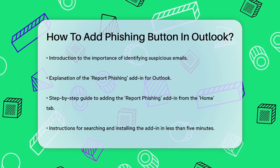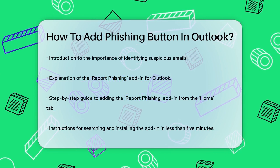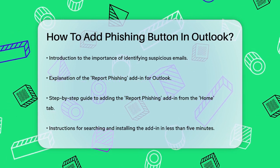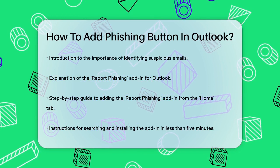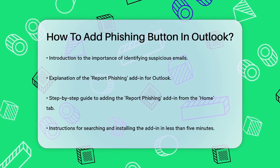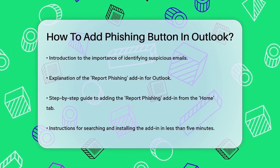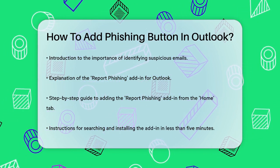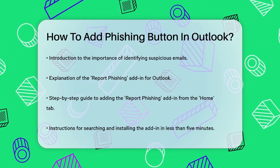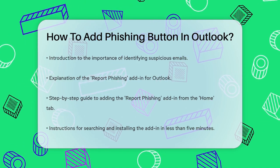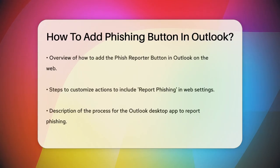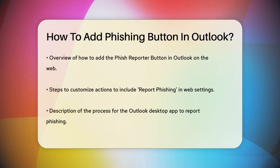First, let's talk about the Report Phishing add-in. This is a tool that allows you to report suspicious emails directly from your Outlook inbox. To add this add-in, go to the Home tab in Outlook, click on the Get Add-ins button, and search for the Report Phishing add-in. Once you find it, click Add to install it. This process is quick and should take less than 5 minutes.